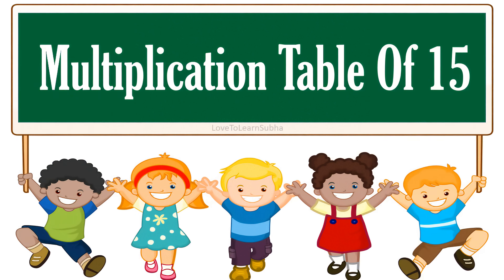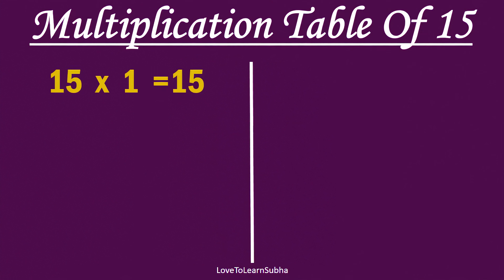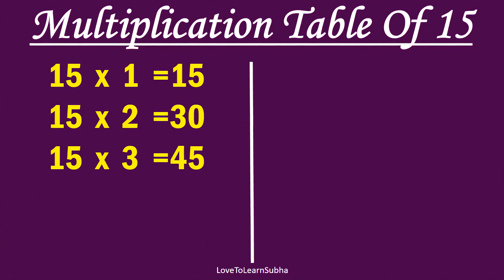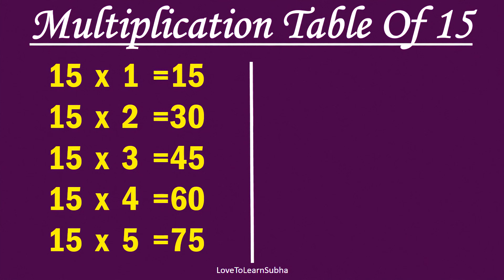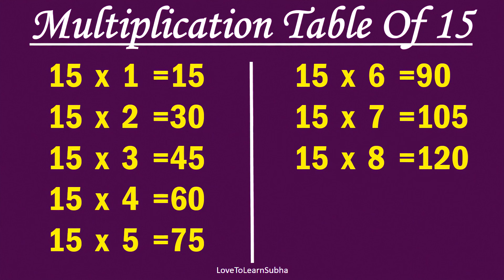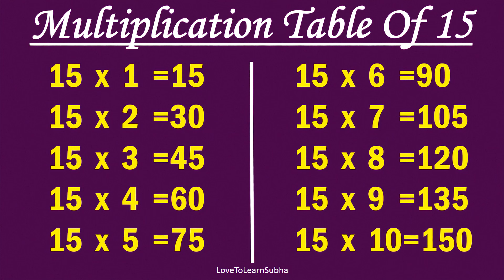Multiplication table of 15. 15×1 is 15, 15×2 is 30, 15×3 is 45, 15×4 is 60, 15×5 is 75, 15×6 is 90, 15×7 is 105, 15×8 is 120, 15×9 is 135, 15×10 is 150.